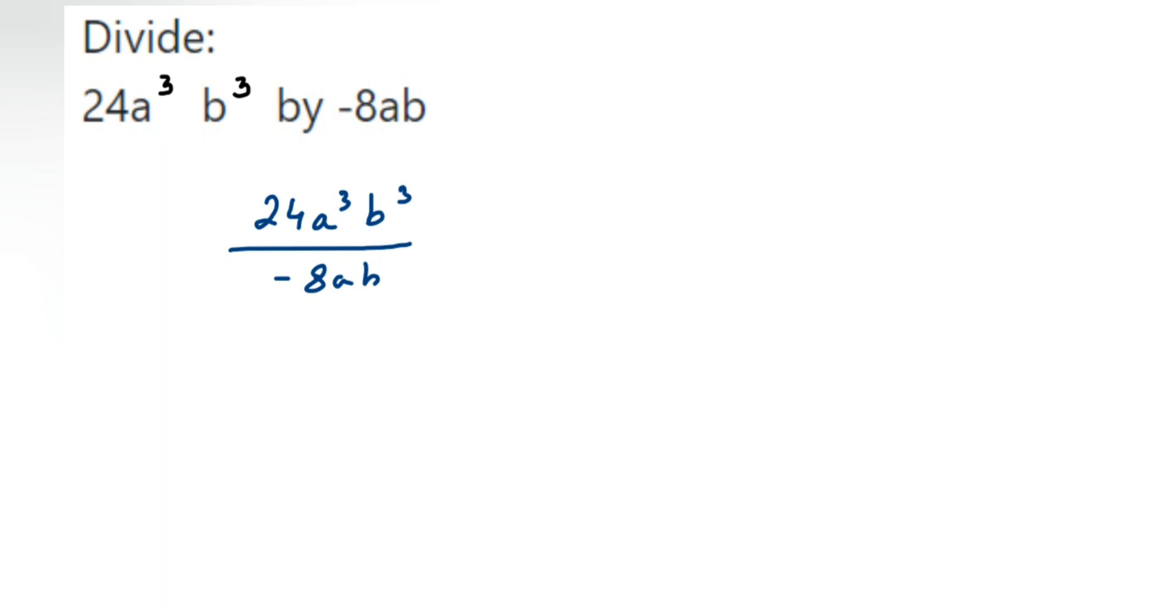Now there's one way where we have to expand and then cancel it. Like expand a³ as a into a into a, b as b into b into b, expand 24 in prime factor form, and then you can do it. That's one way, but it will take a lot of time. The other way is to use laws of exponents to solve it.